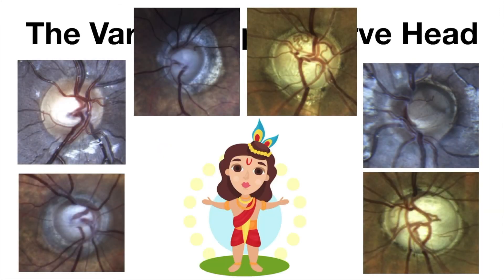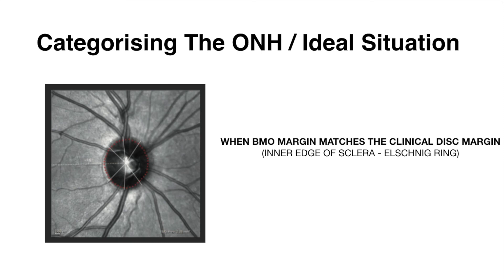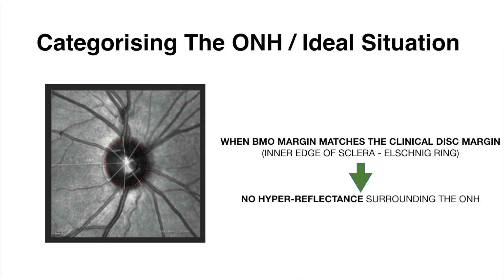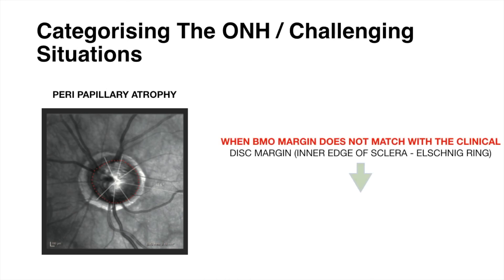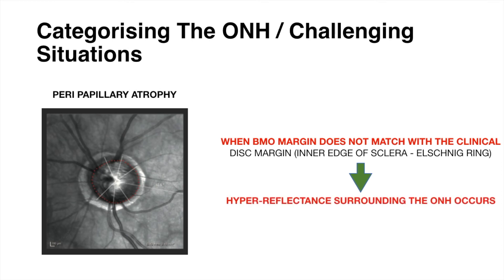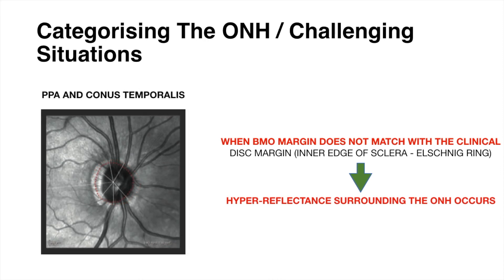Different persons will have different optic nerve heads, making categorization challenging. Ideally, the BMO margin matches the clinical disc margin, so there will be no hyperreflectance surrounding the optic nerve head on OCT. In challenging situations when the BMO margin does not match the clinical disc margin, hyperreflectance occurs surrounding the optic nerve head — for example, in peripapillary atrophy, conus temporalis, or PPA with conus temporalis.